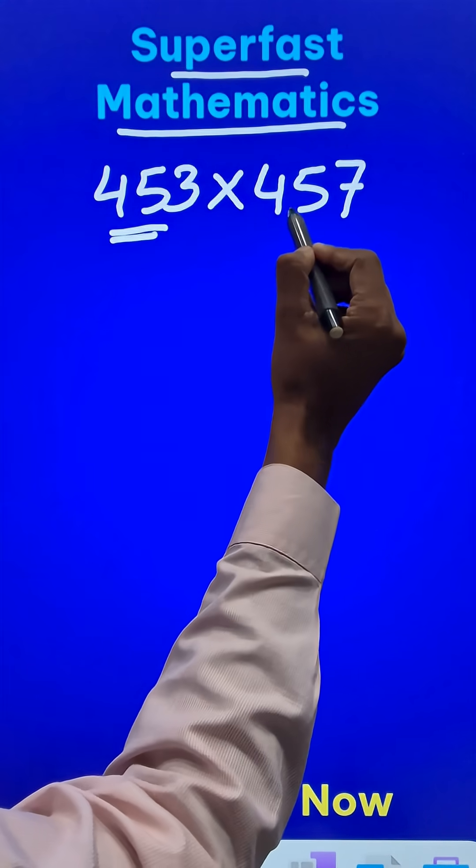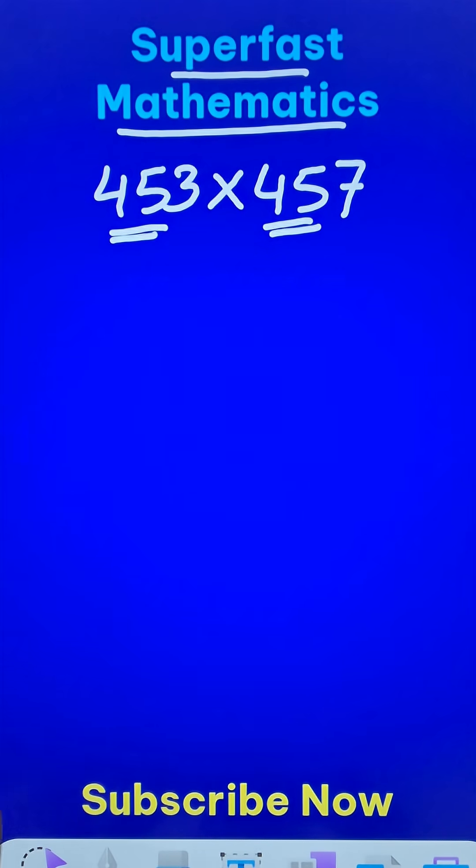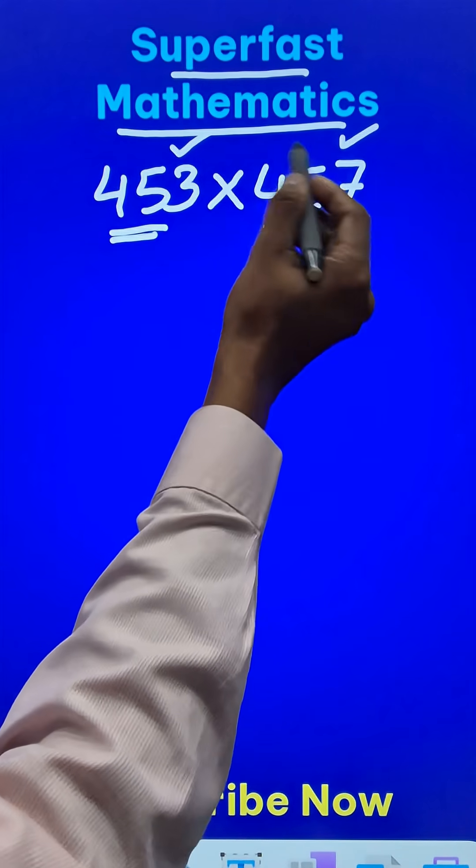You can see the first two digits, 45 and 45, are the same. And the last digits, 3 and 7, add up to 10.